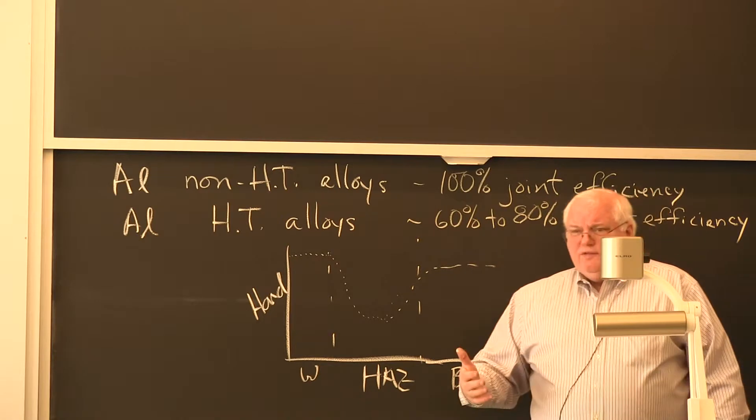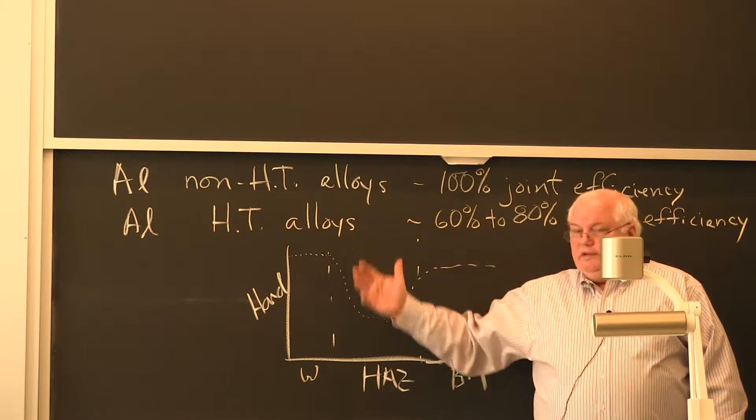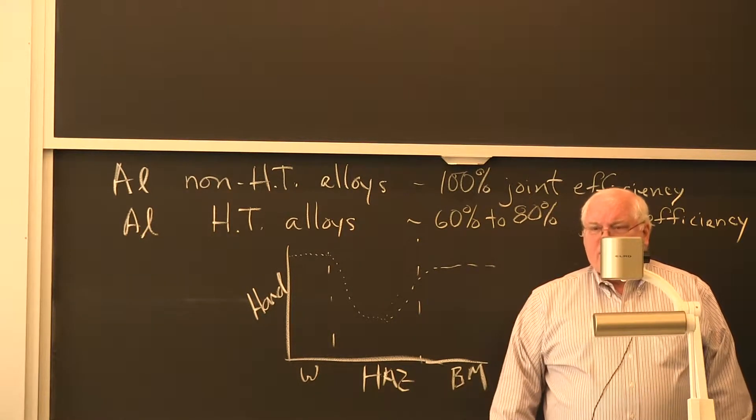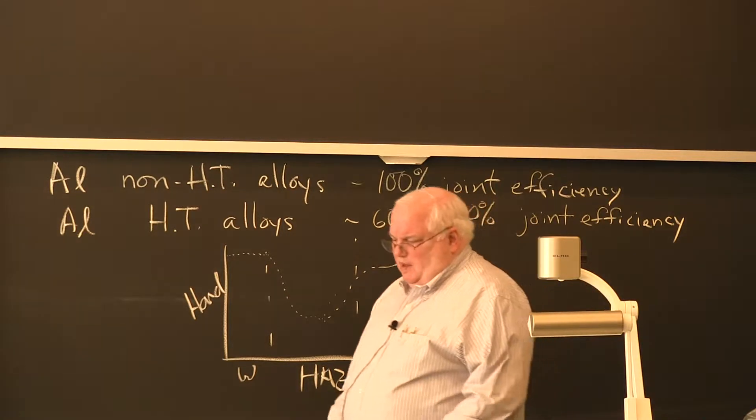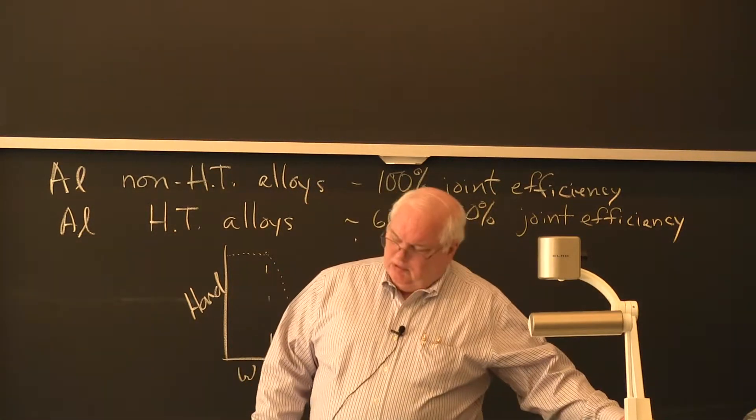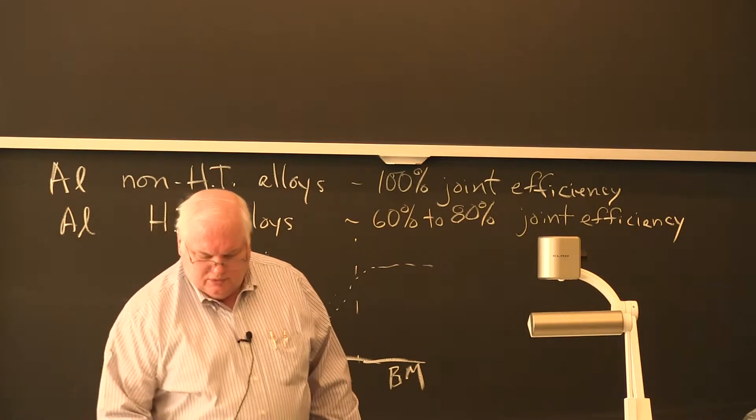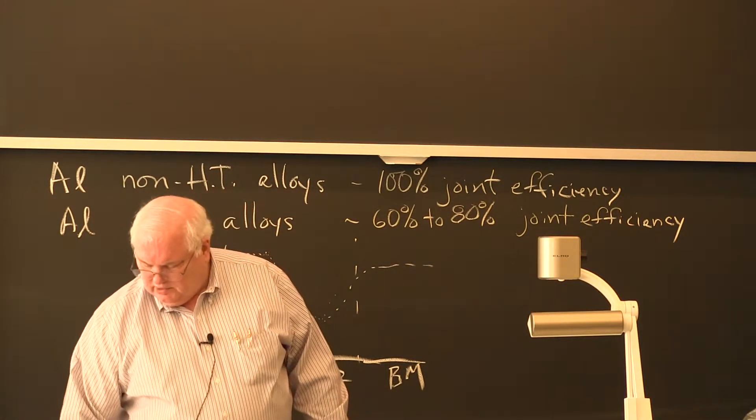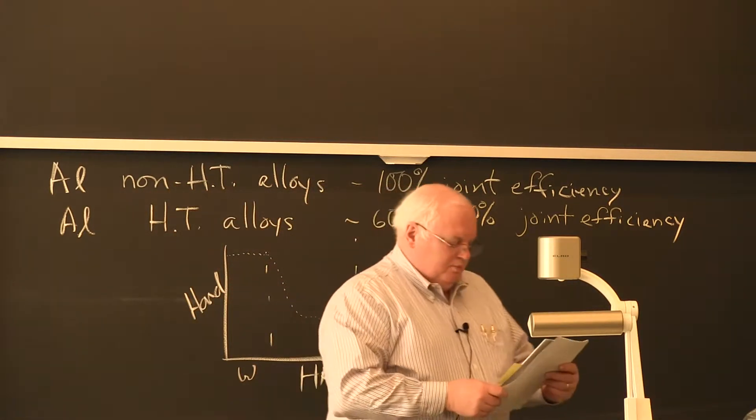So you're going to get softening and you can lose 40% of your strength. If you're using a strength-limited design, you'd lose the advantage of the heat-treatable alloy. So we have to do some things to take care of that. There are a lot of things that people in aluminum do to try to make it possible to weld and take advantage of the high strength of the heat-treatable aluminum alloys.